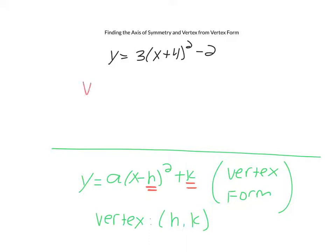So if we were to ask ourselves what would the vertex be of this quadratic equation up here, the value that's currently in this x spot is 4, and the value that's currently in the y spot is negative 2.